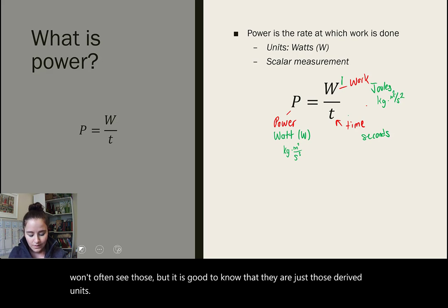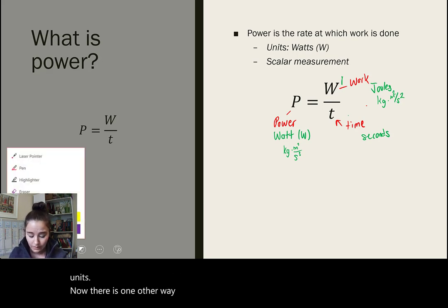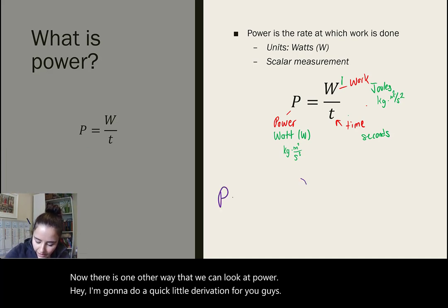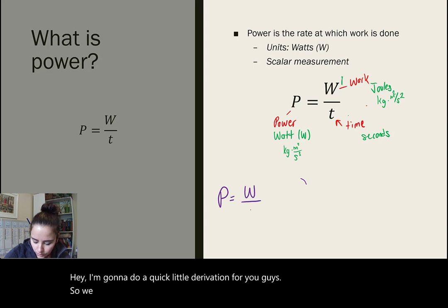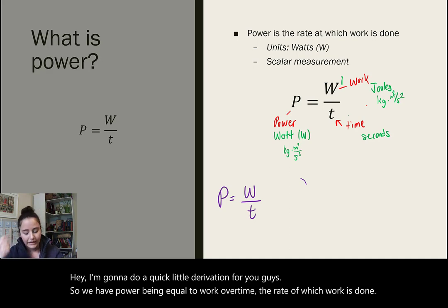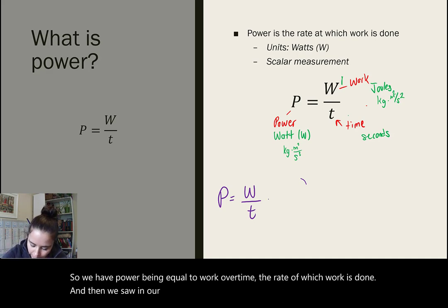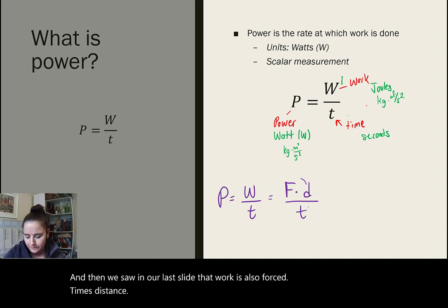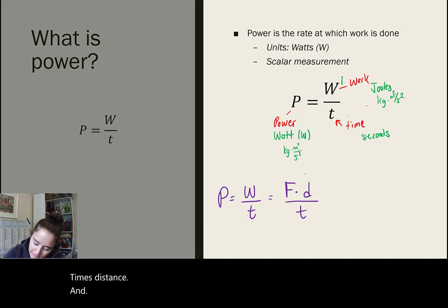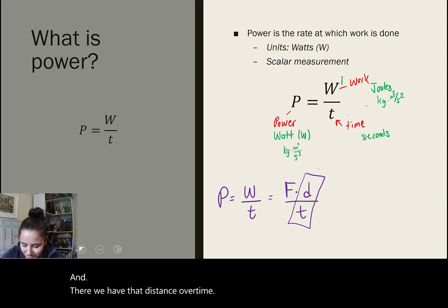Now, there is one other way that we can look at power. I'm going to do a quick little derivation for you guys. So, we have power being equal to work over time, the rate at which work is done. And then, we saw that work is also force times distance over time. And there we have that distance over time. Distance over time is just your velocity.